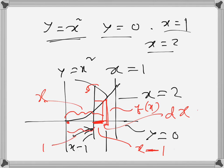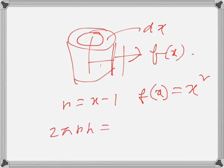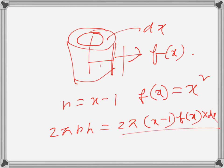This straight line is x equal to 1, so this length is x minus 1 because this whole length is x and this much is 1. So the radius is x minus 1. f(x), which is y, is x squared. For the cylindrical shell, the surface area is 2πrh, where r is x minus 1 and h is f(x). For the volume we multiply by the thickness dx. We need to integrate from x equal to 1 to x equal to 2 to add all the cylindrical shells generated.